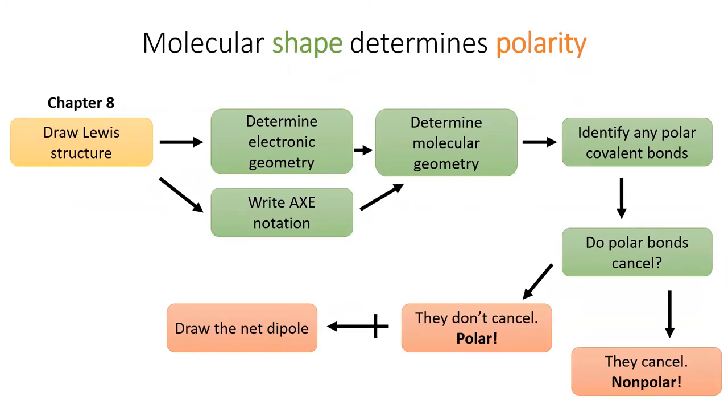I show this flowchart at the beginning of the chapter to demonstrate how we use the Lewis structure to determine whether a molecule is polar, like water, or nonpolar, like oil.